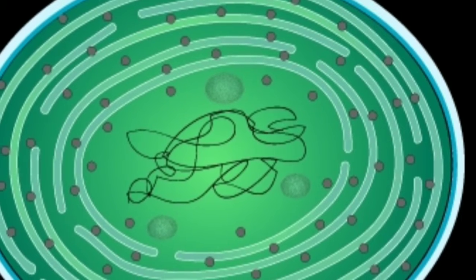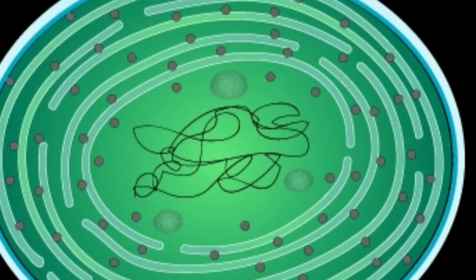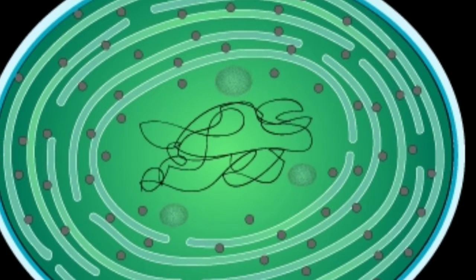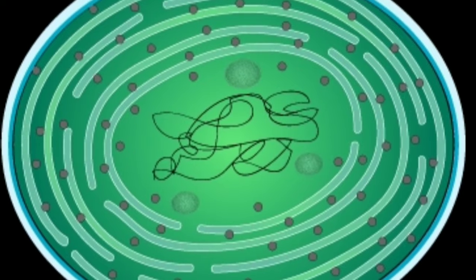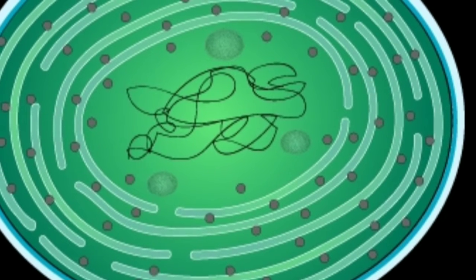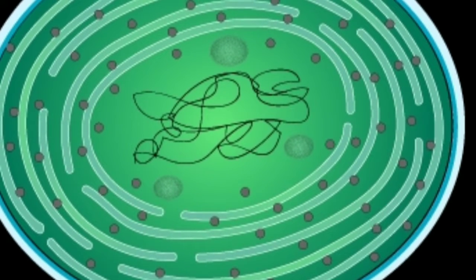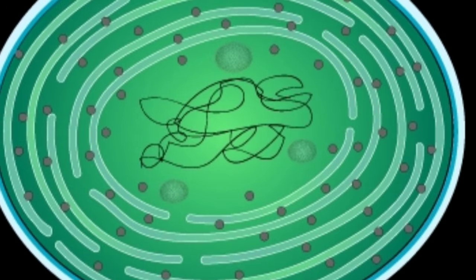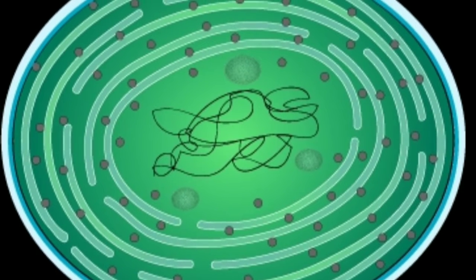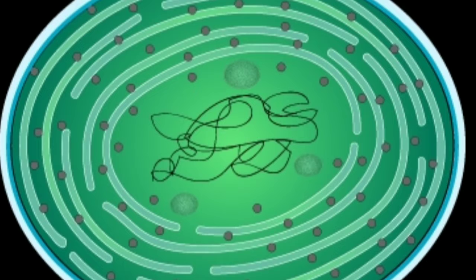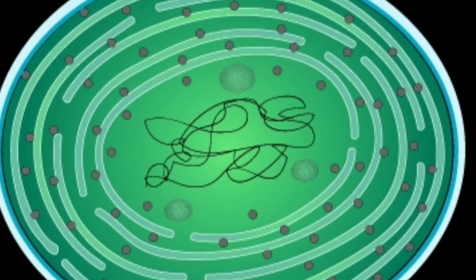So first we are going to start with mucilage sheet. Mucilage sheet is also known as slime layer or capsule. It surrounds the cell wall of cyanobacteria by thin or thick covering. Thin covering is found in Anacystis montana and thick covering is found in Anabaena.